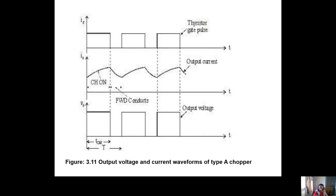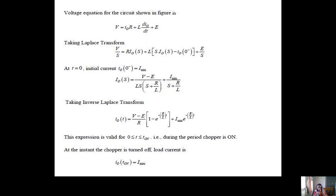The waveforms for Type A chopper show thyristor gate pulses and output current. When CH1 is on, the current flows from minimum to maximum. When the chopper is off, the freewheeling diode conducts, keeping current in continuous mode. The output voltage is obtained only when the chopper is on; when the chopper is off, the output voltage is zero.